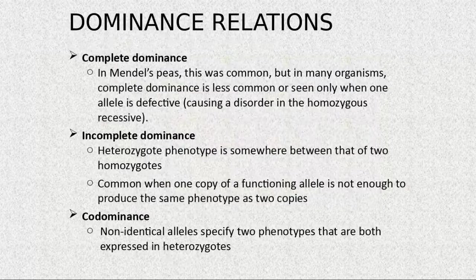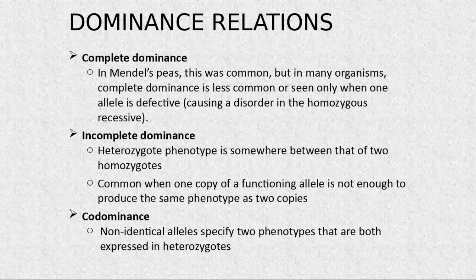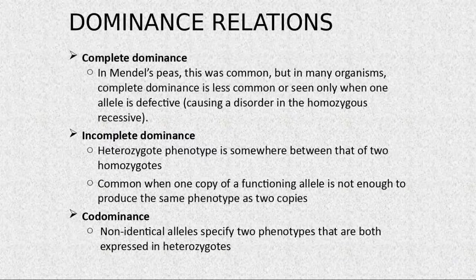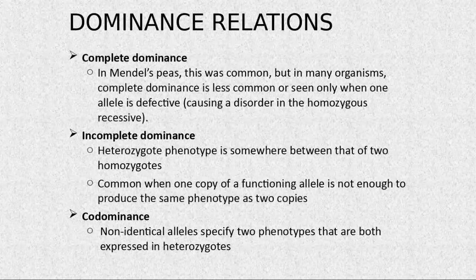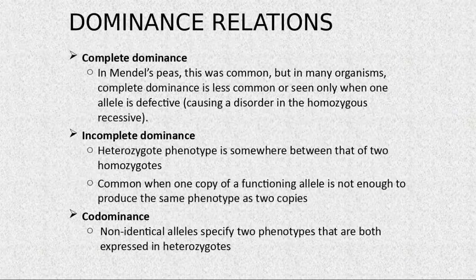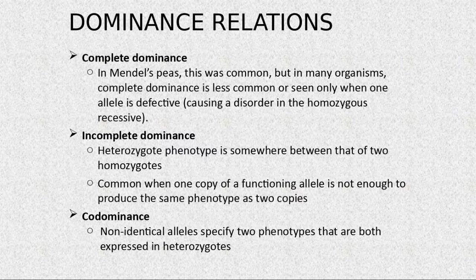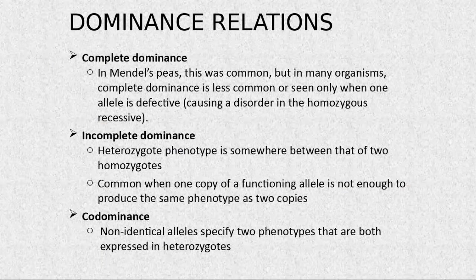Complete dominance is what we see in the peas — it was very common. We can only see the recessive phenotype in homozygous recessive individuals. Incomplete dominance is when the heterozygous phenotype is somewhere between that of the two homozygotes. One copy of the functional allele is not enough to produce the same phenotype as two copies. In codominance, non-identical alleles specify two phenotypes that are both expressed simultaneously.